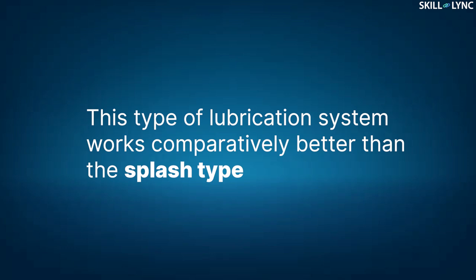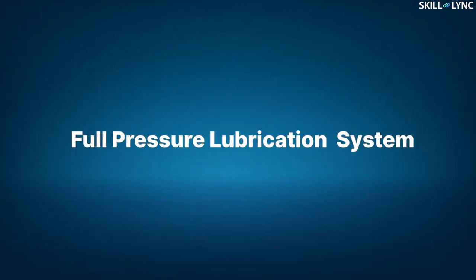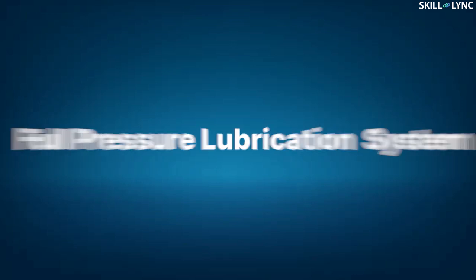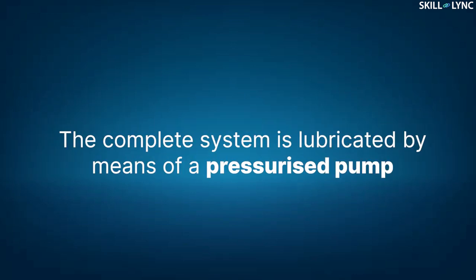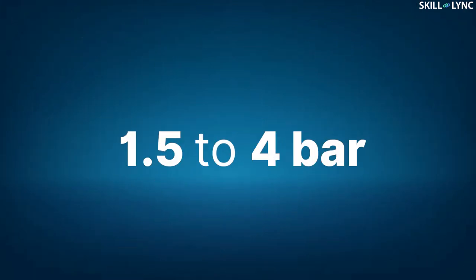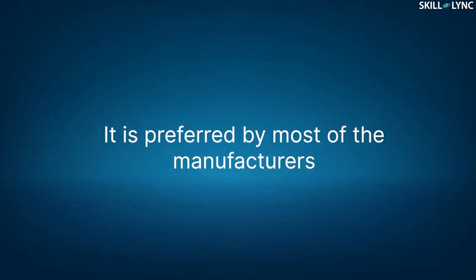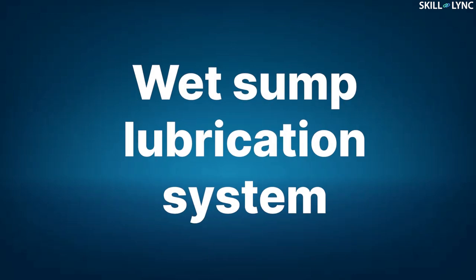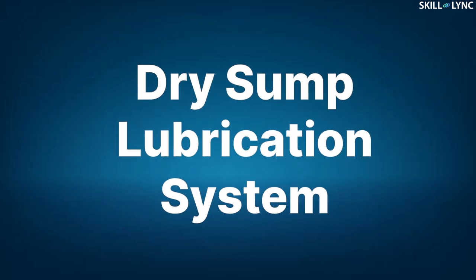This type of lubrication system works comparatively better than the splash type. The next type of wet sump lubrication is the full pressure type system. The complete system is lubricated by means of a pressurized pump instead of splashing. A hole is drilled in the connecting rod through which oil enters from the lower end to the upper end for lubrication. This system can supply the lubricant at a pressure of 1.5 to 4 bars and is preferred by most manufacturers.